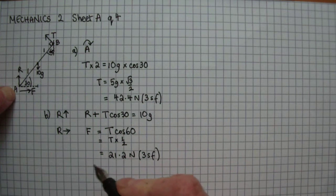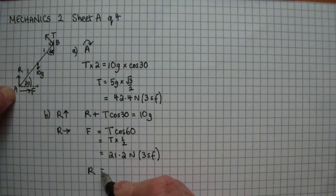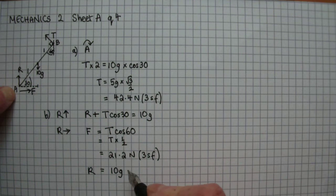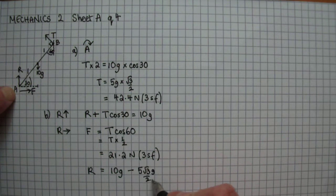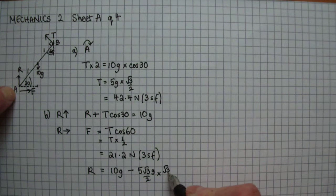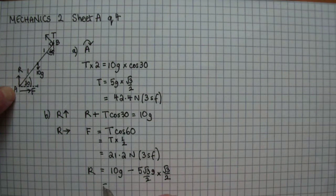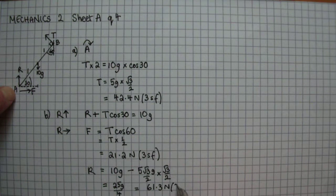Now that we know F, we can work out R because that's 10g minus the 5 root 3g over 2 times root 3 over 2, which simplifies down to 25g over 4, but that equals 61.3 Newtons to three significant figures.